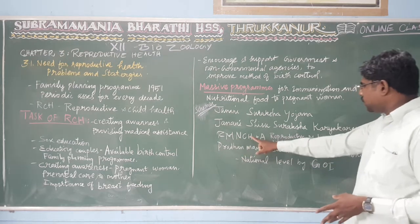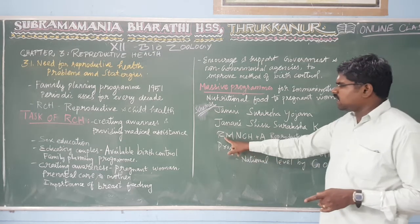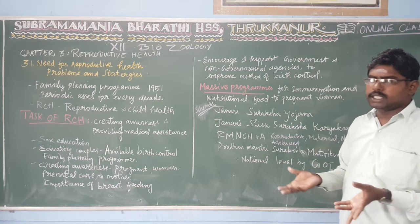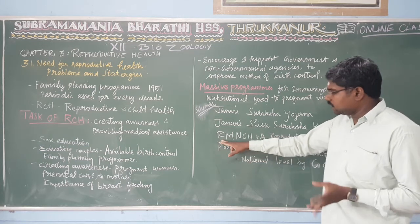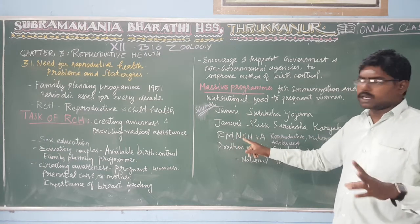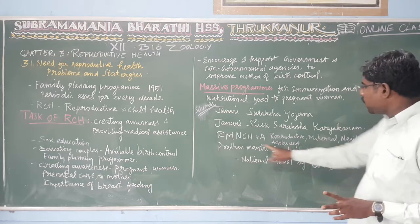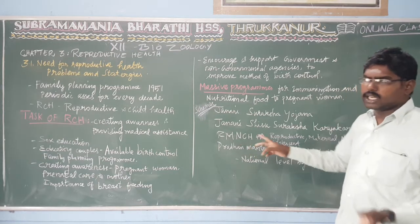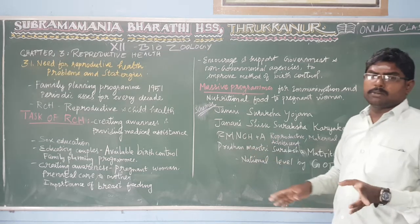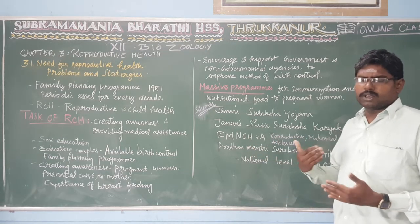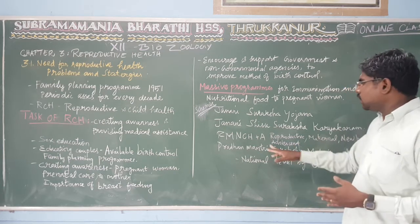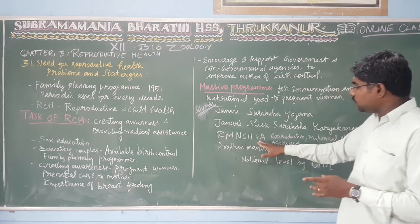R means Reproductive, M means Maternal. So when we say reproductive, we also cover the maternal — that is, the pregnant woman. Then there is the newborn, and then there is the child, and then there is the adolescent. This gives us RMNCH — Reproductive, Maternal, Newborn, Child, and Health.